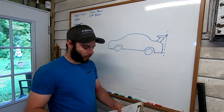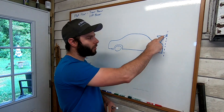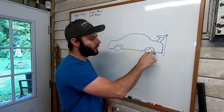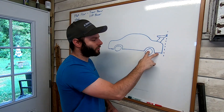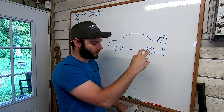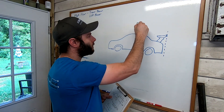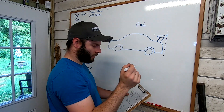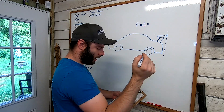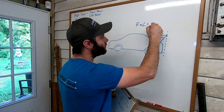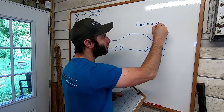Where your wing is multiplies the leverage of the downforce created on your rear wheels. The formula is pretty simple: it's Force times Length, and that has to equal X times Weight.